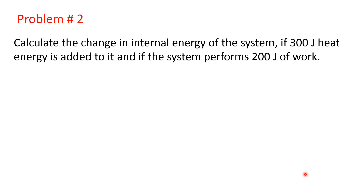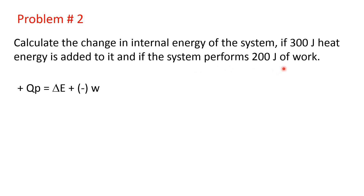Problem number two: Calculate the change in internal energy of the system if 300 joules of heat energy is added to it and if the system performs 200 joules of work. Here, 300 joules of energy is added to it and the system performs 200 joules of work. The formula from the first law of thermodynamics: Qp equals delta E plus W. The system performs work, so this is work of expansion — work done by the gas.